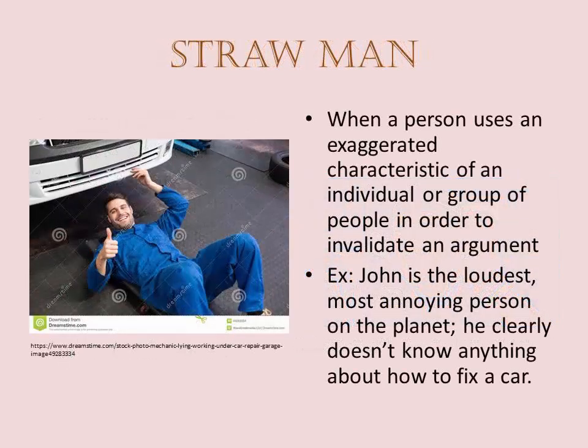Our next logical fallacy is called strawman. Here, a person uses an exaggerated characteristic of an individual or group of people in order to invalidate an argument. The strawman fallacy is an attempt to discredit the individual's ability to make a believable claim by disparaging something about that individual. For example: John is the loudest, most annoying person on the planet. He clearly doesn't know anything about how to fix a car. John's unpleasant personality has no bearing on his knowledge of automotive mechanics and, therefore, cannot be used to discredit his skills in that department.